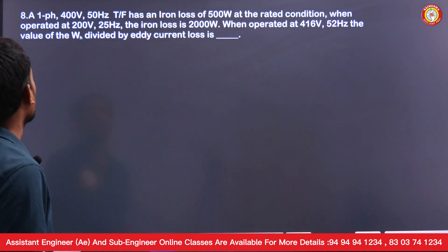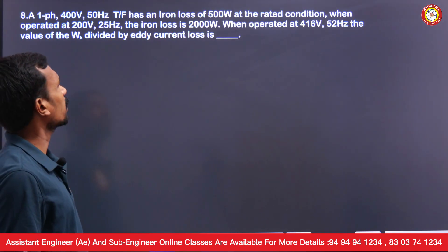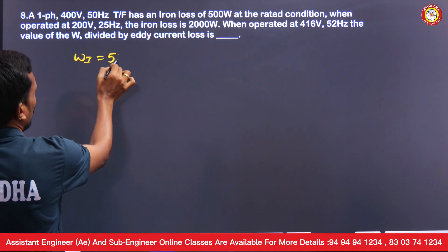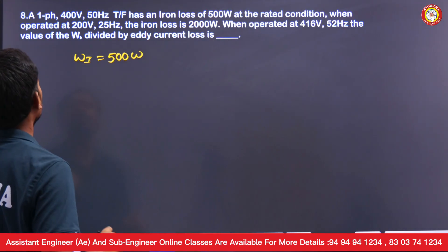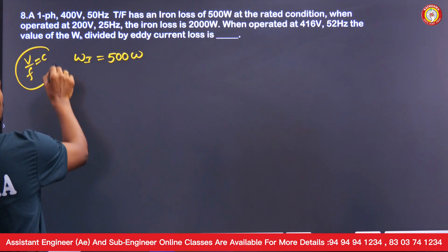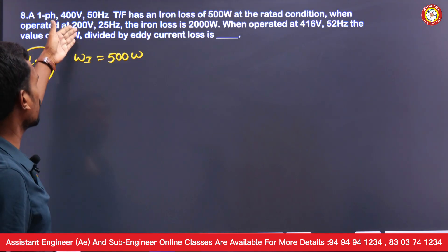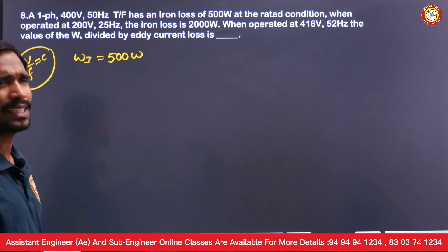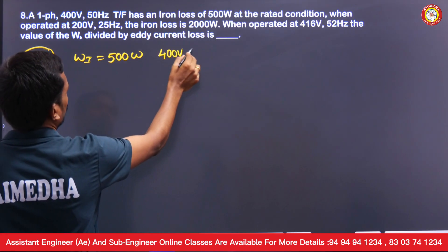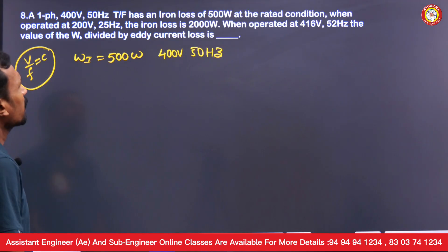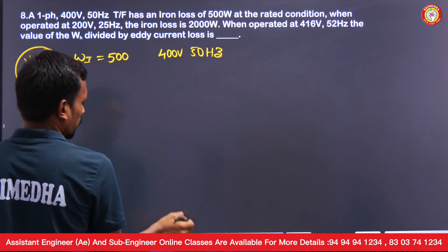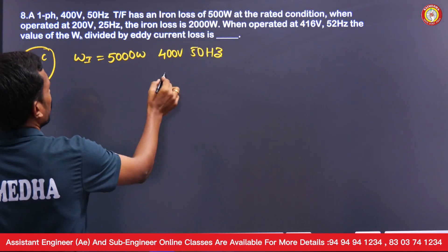Next question: a single phase 400V, 50 Hz transformer has an iron loss of 5000 watts at rated condition. When voltage and frequency are reduced with V/f ratio constant — 400/50 = 8 — the iron losses also reduce to 2000 watts. Note: the iron loss should be 5000 watts, not 500 watts.